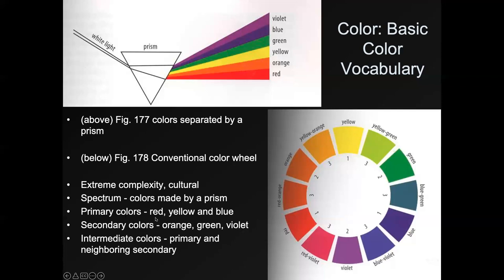The primary colors are red, yellow, and blue — they're evenly spaced around the color wheel. The secondary colors are orange, green, and violet — exactly between each pair of primary colors. The intermediate or tertiary colors are a primary and its neighboring secondary. For example, an intermediate color between yellow and orange is yellow-orange, and between yellow and green is yellow-green. So: primary — yellow; secondary — green; tertiary/intermediate — yellow-green.